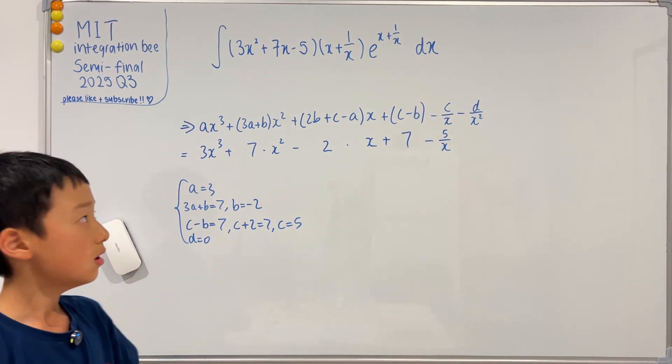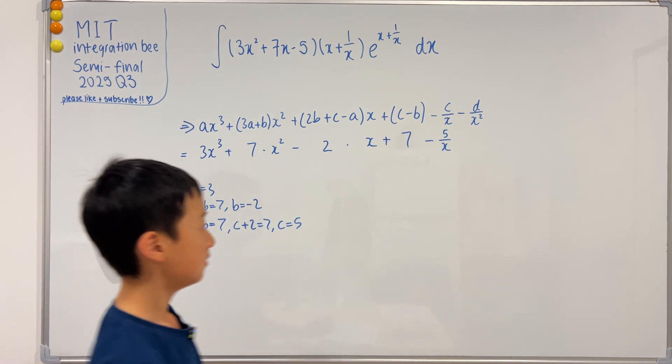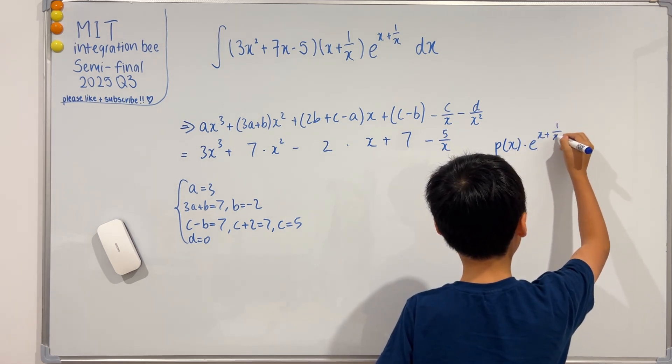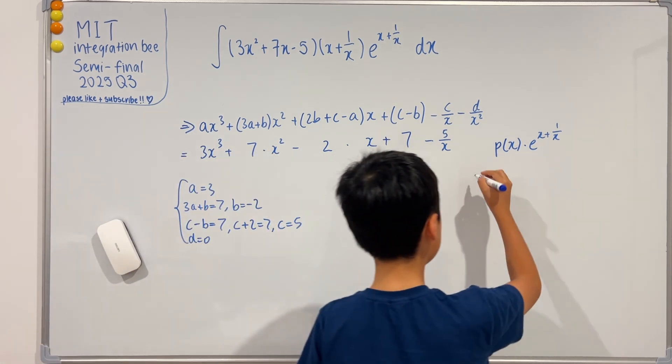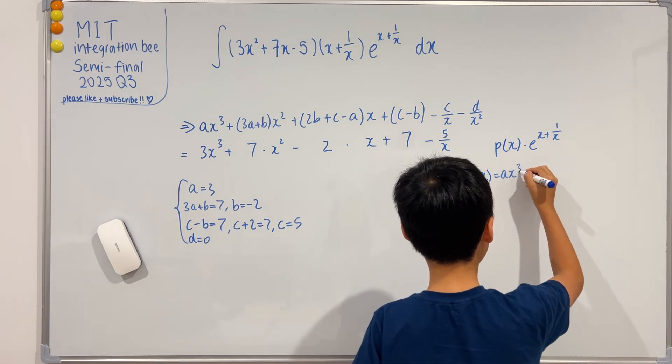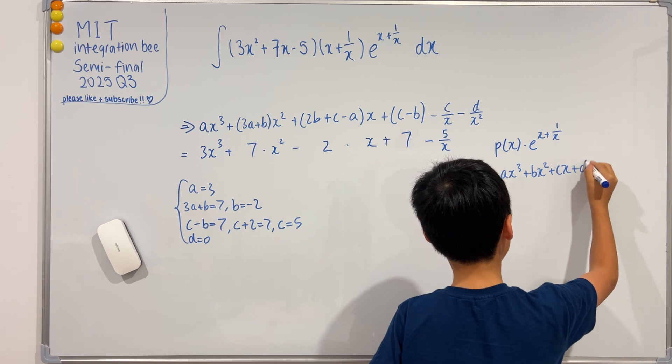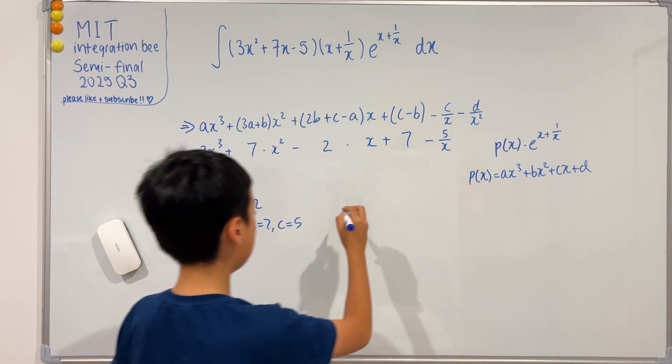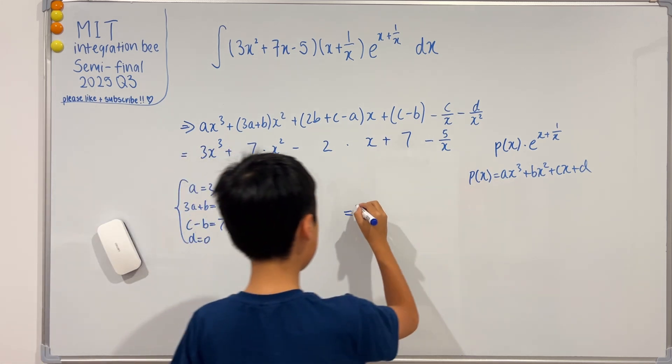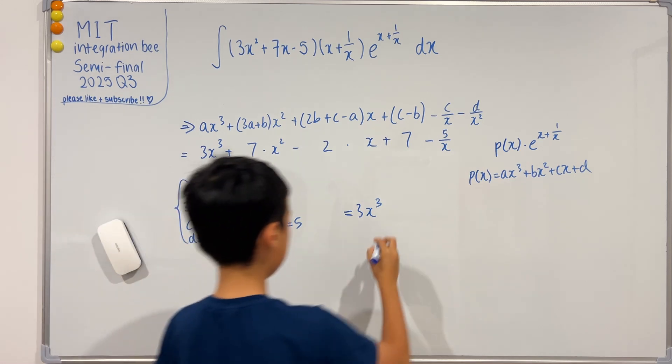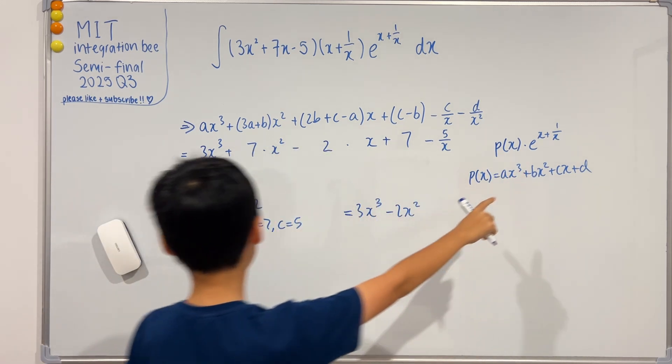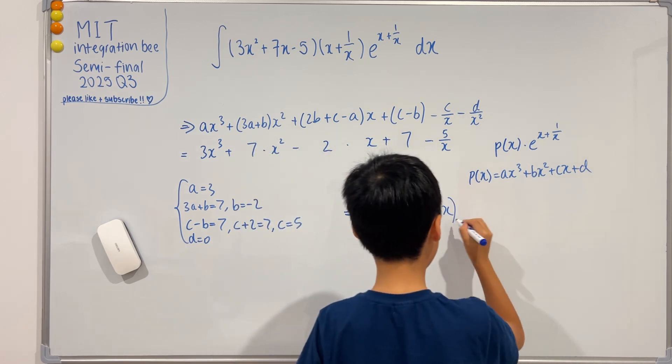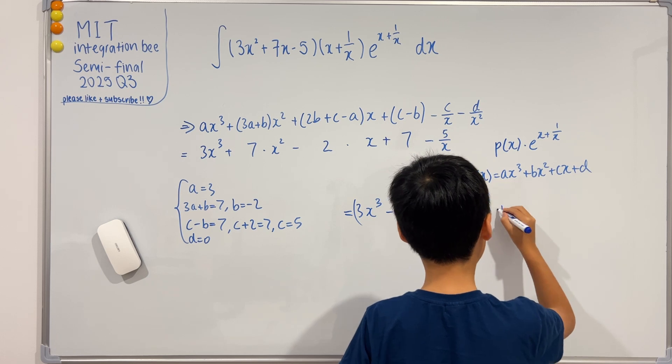If you remembered, this integral is equal to p of x times e to the x plus one over x. And if you forgot, p of x was ax cubed plus bx squared plus cx plus d. Now that we have a, b, c, and d, we see that this integral is just equal to p of x, so 3x cubed minus 2x squared plus 5x. D is zero, and we multiply this by e to the x plus one over x, and don't forget that plus c.